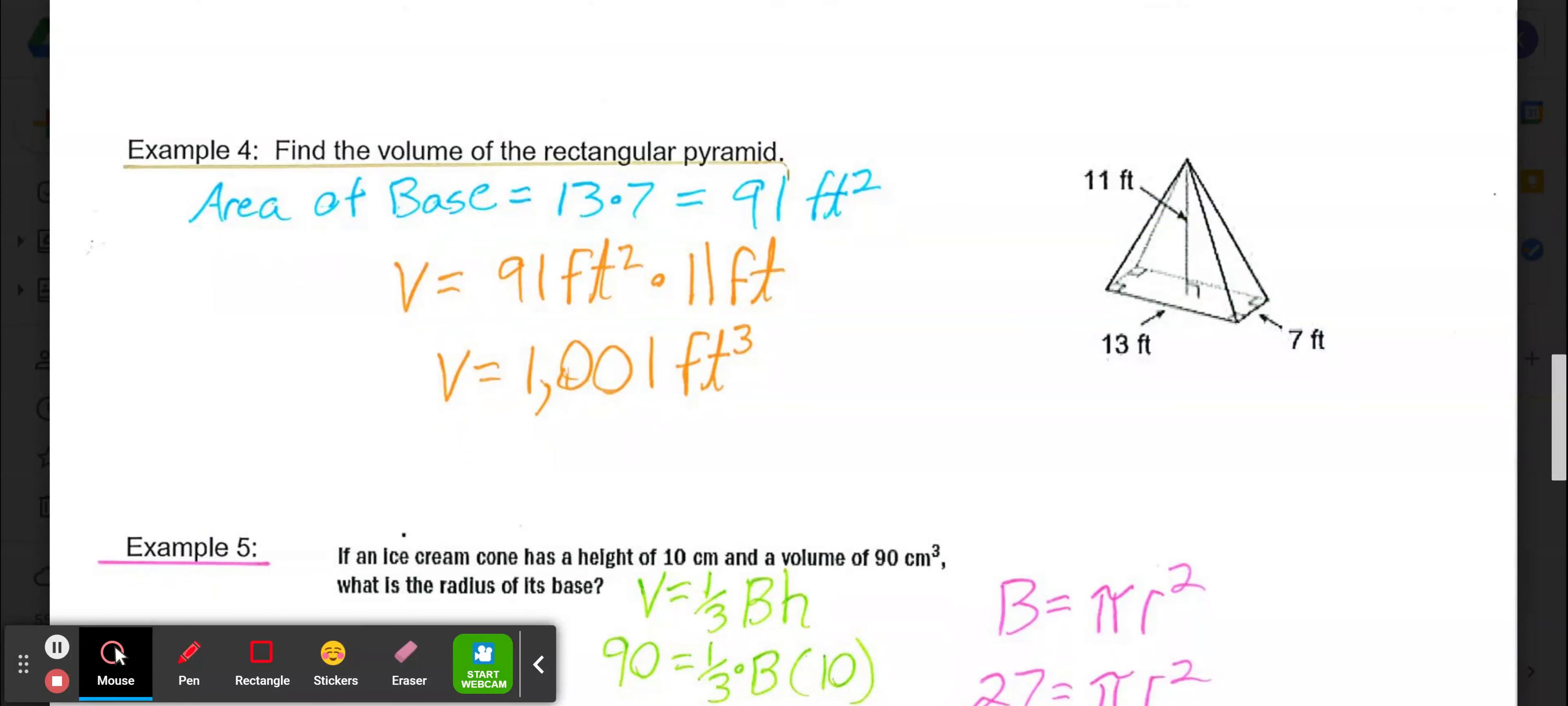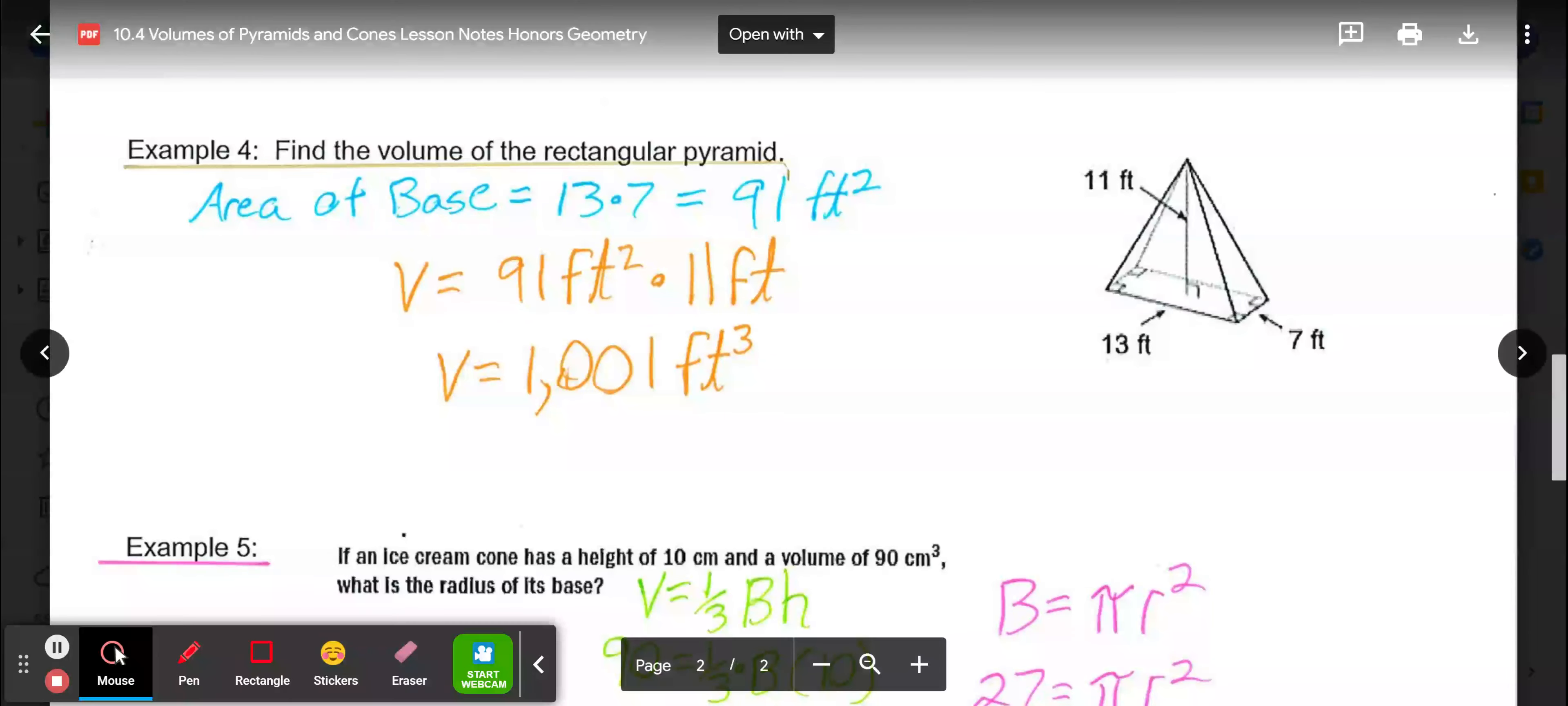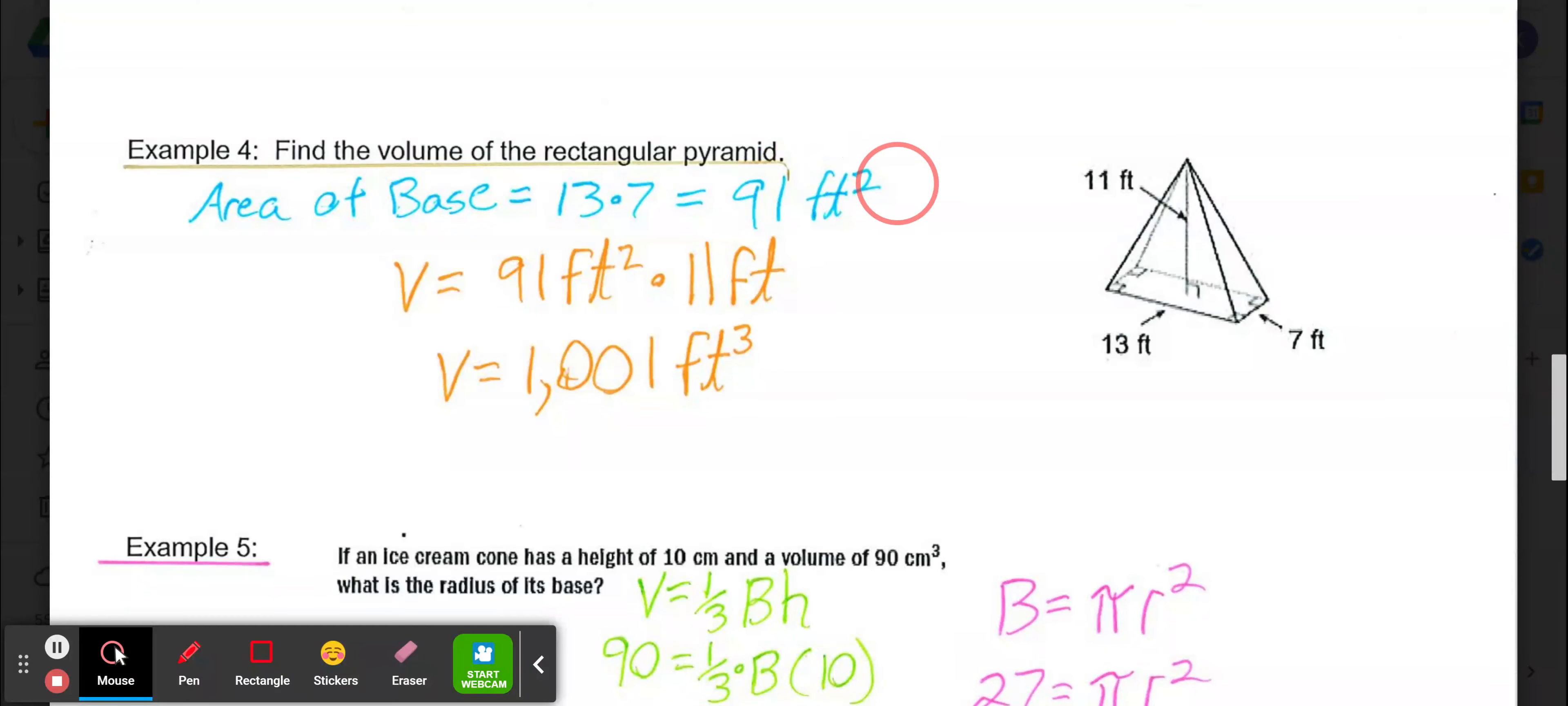Example 4, looking at a rectangular pyramid. We know that because the base is a rectangle. Area of our base, 7 times 13 giving us 91 square feet. Then multiply that area of the base 91 times our height of the pyramid 11 feet, giving us 1001 cubic feet.